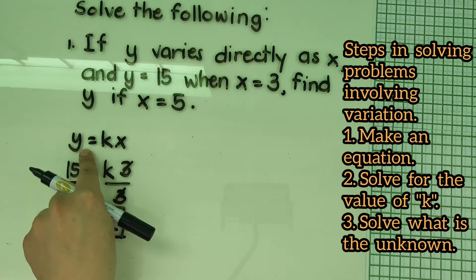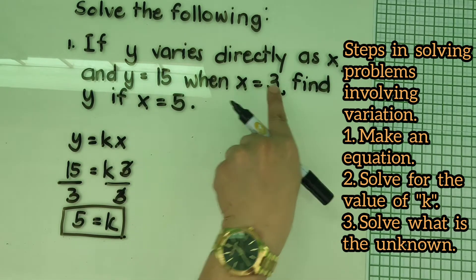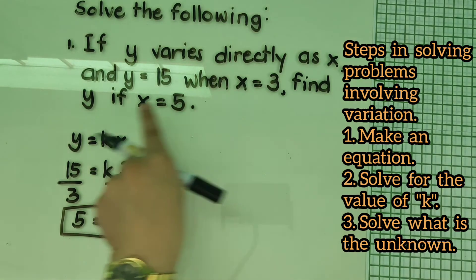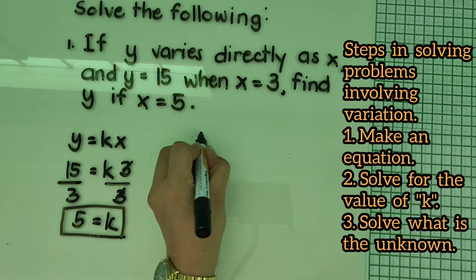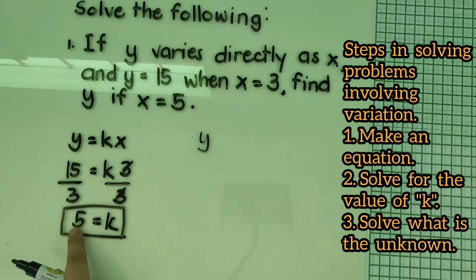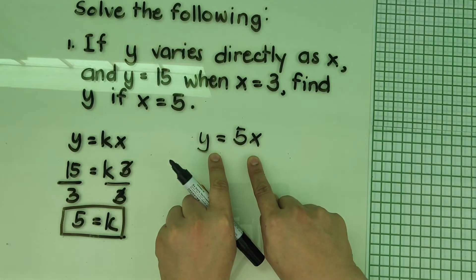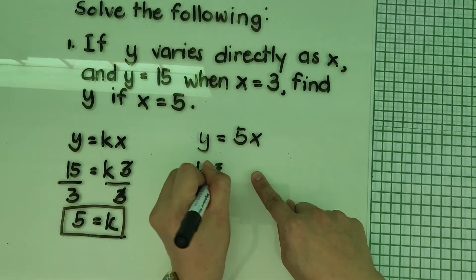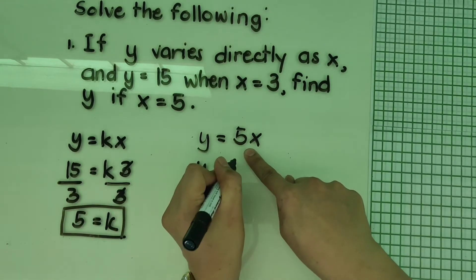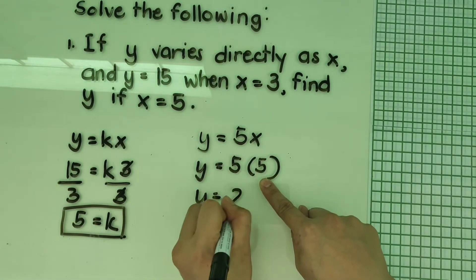Now we use the value of k to find y when x = 5. We substitute k = 5 into the equation: y = 5x. Then substitute x = 5: y = 5 × 5 = 25. So the value of y is 25.